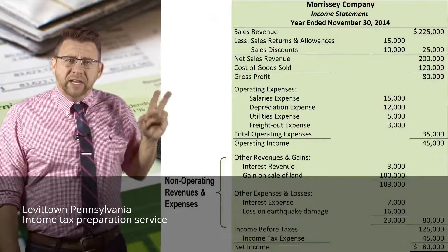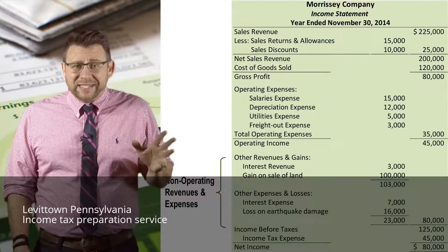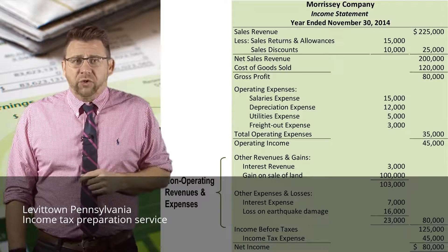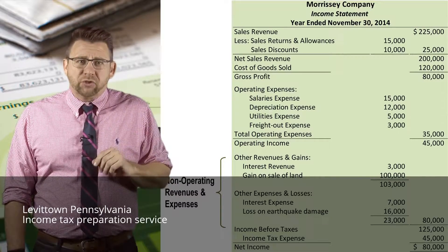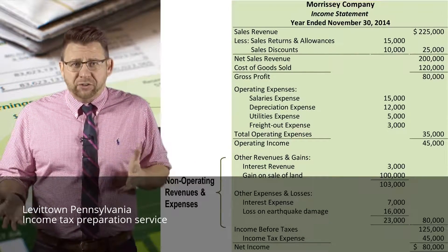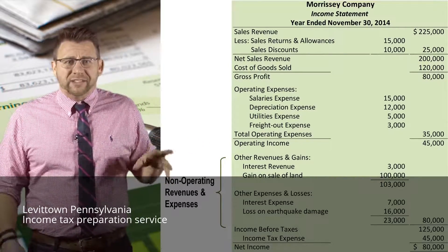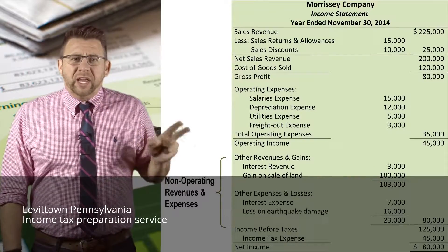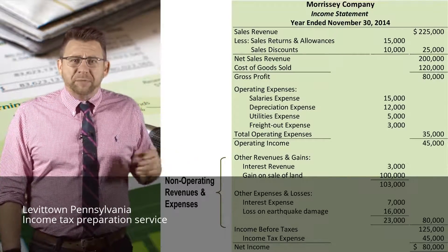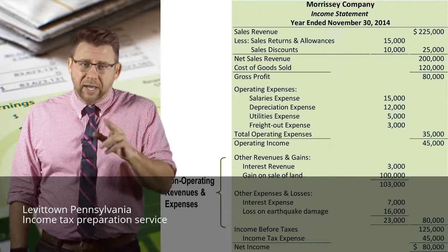The next section reports non-operating revenues and expenses. These items are either one-time amounts — like gain on sale of land or loss from earthquake damage — or items not part of central operations, like interest revenue earned by making a loan or interest expense incurred by financing assets with debt. This section is sometimes known as the 'other' section. Other revenues and gains are added to operating income, and other expenses and losses are deducted, giving us a new subtotal called income before taxes.